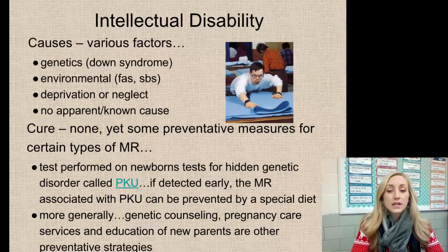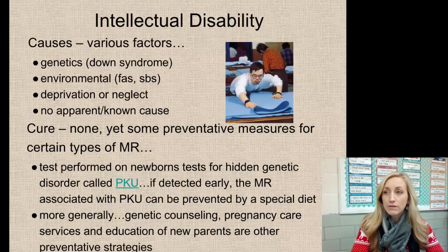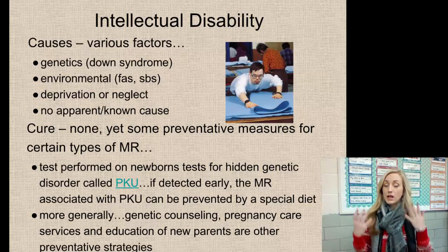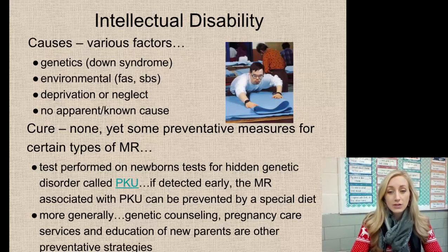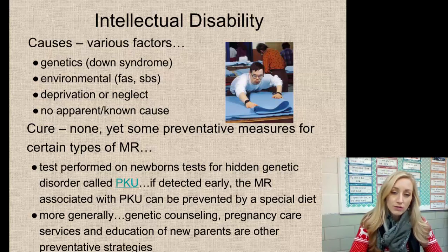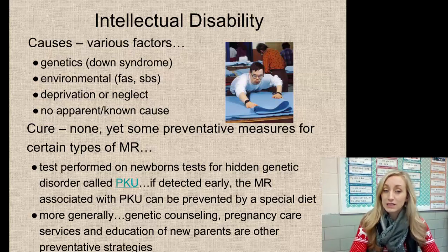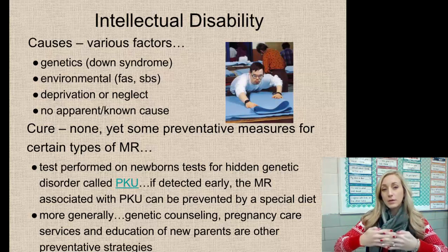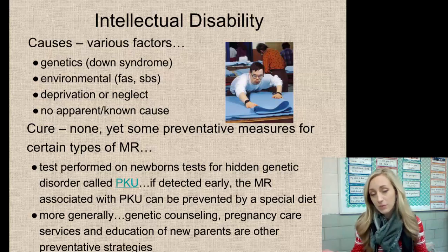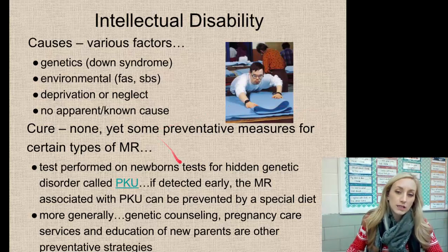Tests performed on newborns can detect a hidden genetic disorder called PKU — the inability to process protein. If a child with PKU eats a normal diet, they become intellectually and physically disabled. If detected early, the intellectual disability can be prevented through a special protein-free diet. More generally, genetic counseling, pregnancy care services, and education of new parents are preventative strategies. Prenatal care visits and vitamins help, but barriers like cost and lack of health insurance prevent many from accessing them.